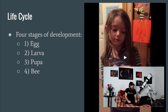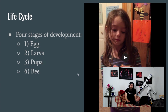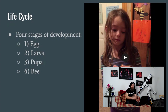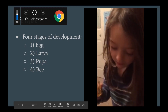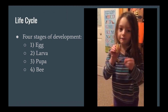This is Ben Watson — Ben Watson's daughter decided she wanted to help, and here she'll tell us a little bit about the four stages of development for the European honeybee. Here's the egg. Here's the larva.